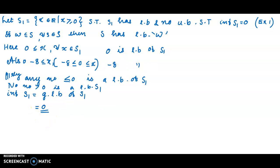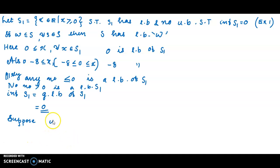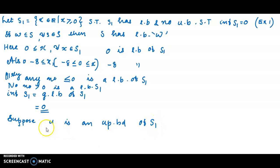Now we have to prove that the set has no upper bounds. Let's prove this by contradiction. Suppose M is an upper bound of S1.